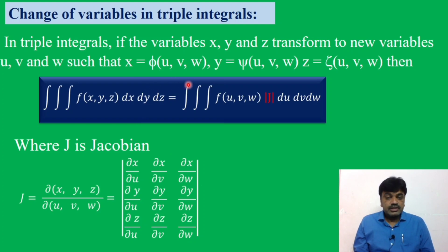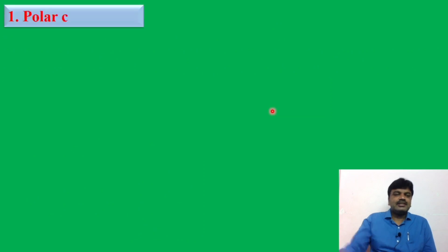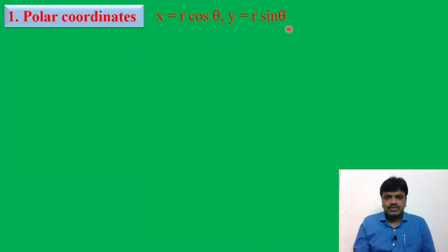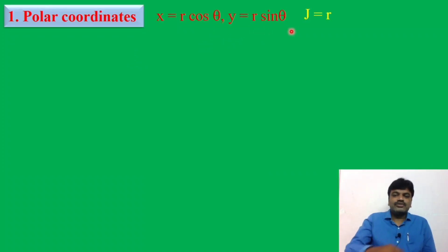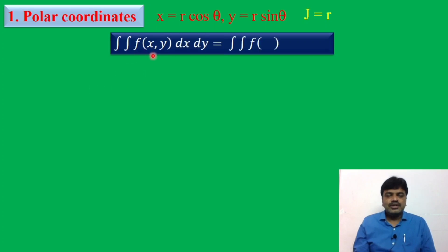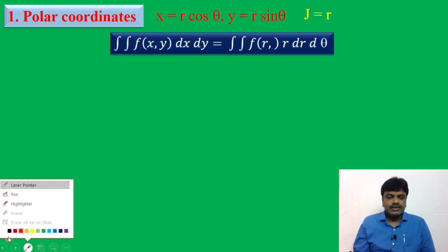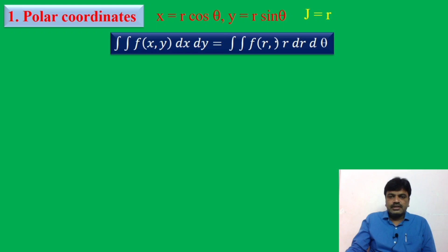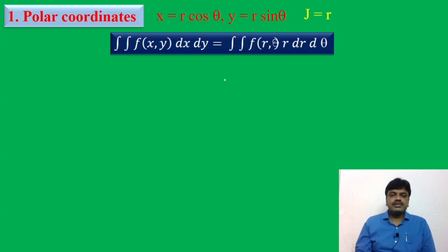This is the general procedure. There are standard forms: polar coordinates, cylindrical polar coordinates, and spherical polar coordinates. In polar coordinates, x = r cosθ and y = r sinθ. The Jacobian value is r, so ∬f(x, y) dx dy = ∬f(r, θ) r dr dθ.